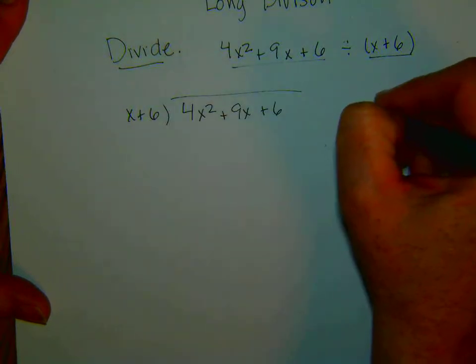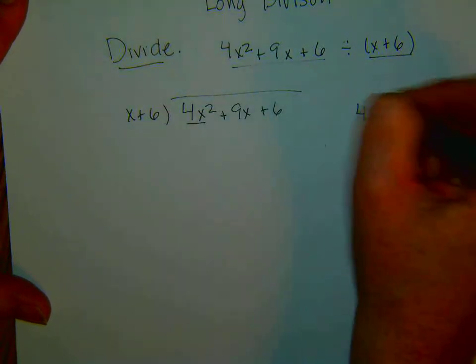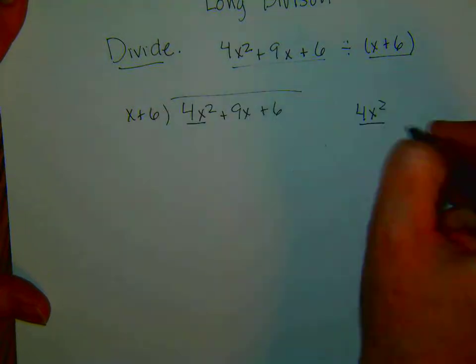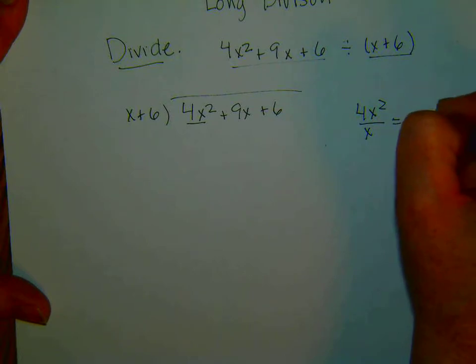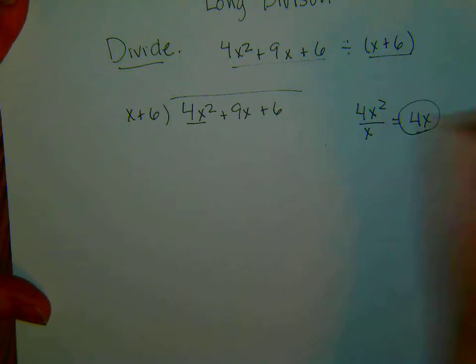Remember that we take the first term, 4x squared, divide only that by x. This gives us 4x squared divided by x is 4x.